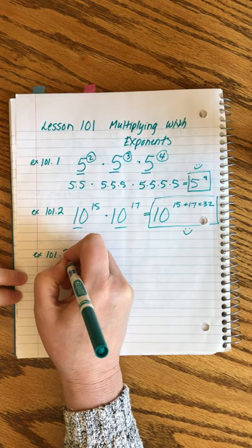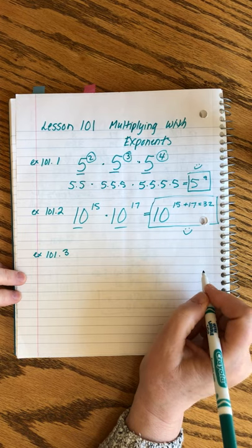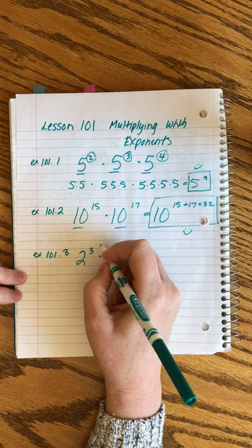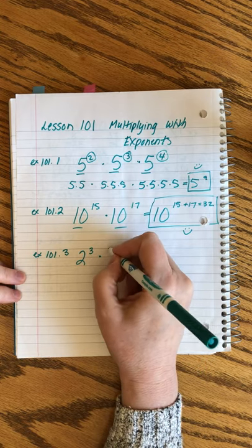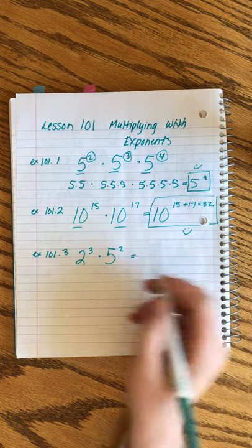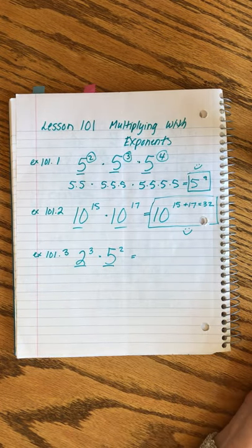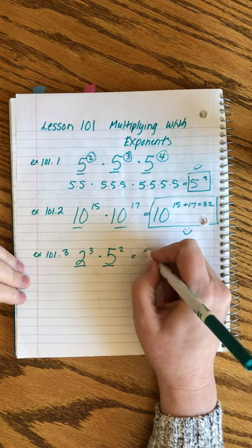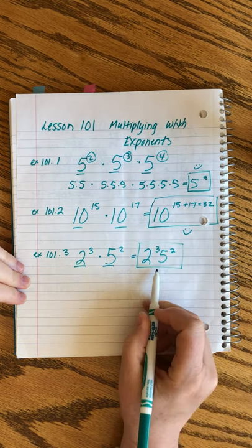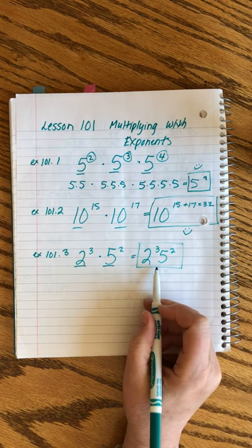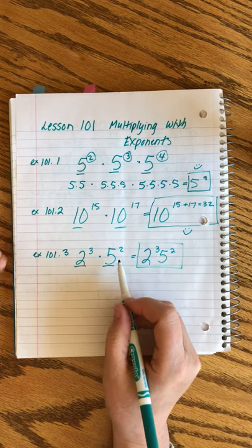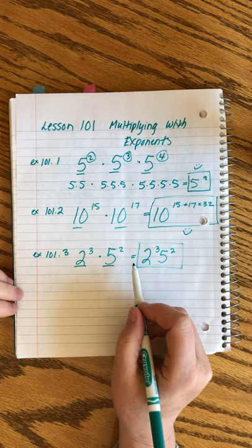This is a curveball. Simplify 2 to the 3rd power times 5 squared. And now we want to simplify this. Slam on the brakes. Check the bases first. They don't match. So guess what? There's nothing we can do to simplify that, except we can write it swooshed together without a multiplication sign, but it's the same thing. If the bases don't match, this doesn't work at all.